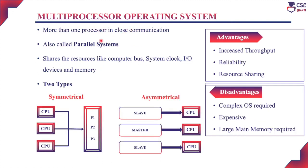Next, multiprocessor operating system. In this operating system, more than one processor will be available for execution and they are in close communication. Since more than one processor will execute simultaneously, it is also called parallel systems. These systems will share resources like computer bus, system clock, IO devices, and memory. There are two types: symmetrical multiprocessing and asymmetrical multiprocessing. In symmetrical multiprocessing, each processor will have its own operating system and these processors will communicate with each other during execution, and memory is shared among different processors. In asymmetrical multiprocessing, one processor is assigned as a master processor and the remaining processors act as slave processors. The master processor will only assign jobs to the slave processors, and these slave processors will not communicate with each other — only communication is between master and slave. In symmetrical multiprocessing, any processor can run the OS task, but in asymmetrical multiprocessing, only the master processor will run the OS task.